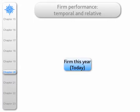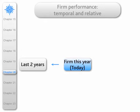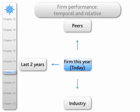When we're looking at a firm's performance, we want to have two dimensions to it: the temporal and the relative. Here's any firm and here's its performance this year. We want to look back and see how it has performed over the past two years — has it been getting stronger or getting weaker? We also want to see how it has performed relative to its peers, that is similarly structured companies, and where it stacks up in the industry — is it a leader or is it a follower?